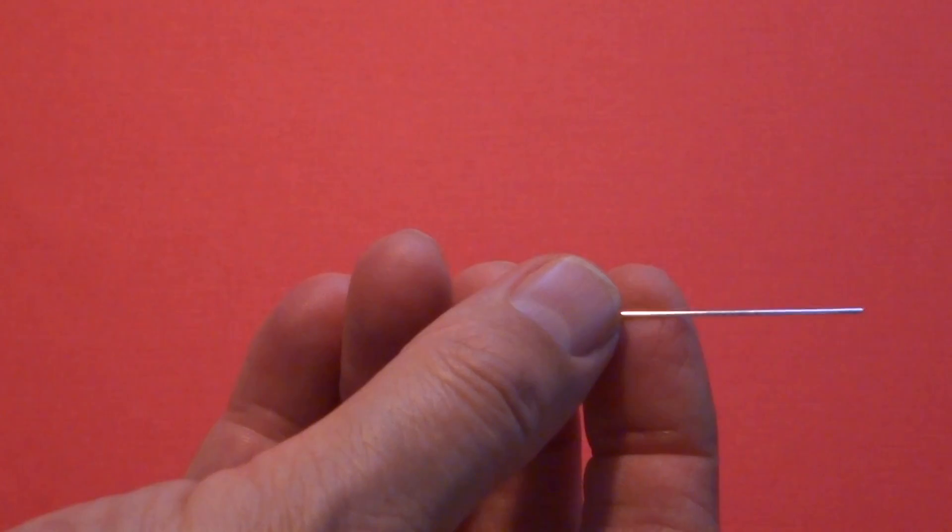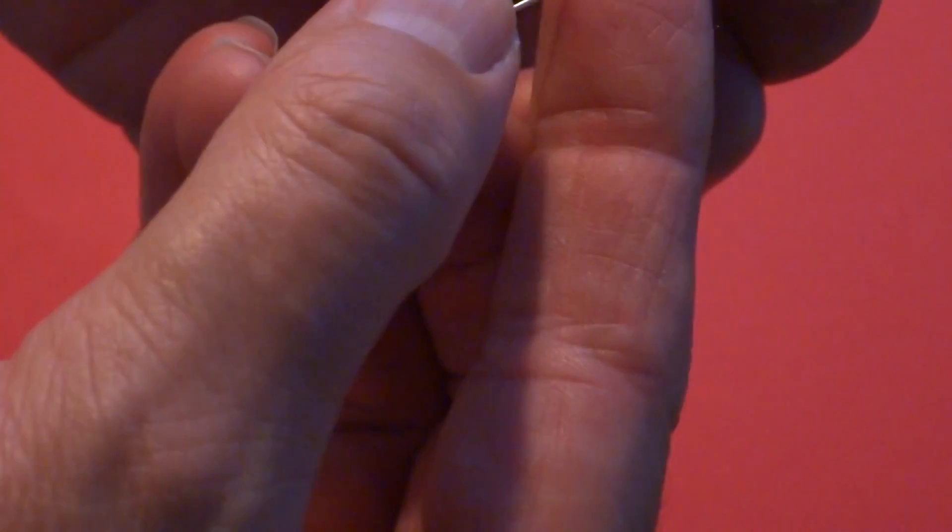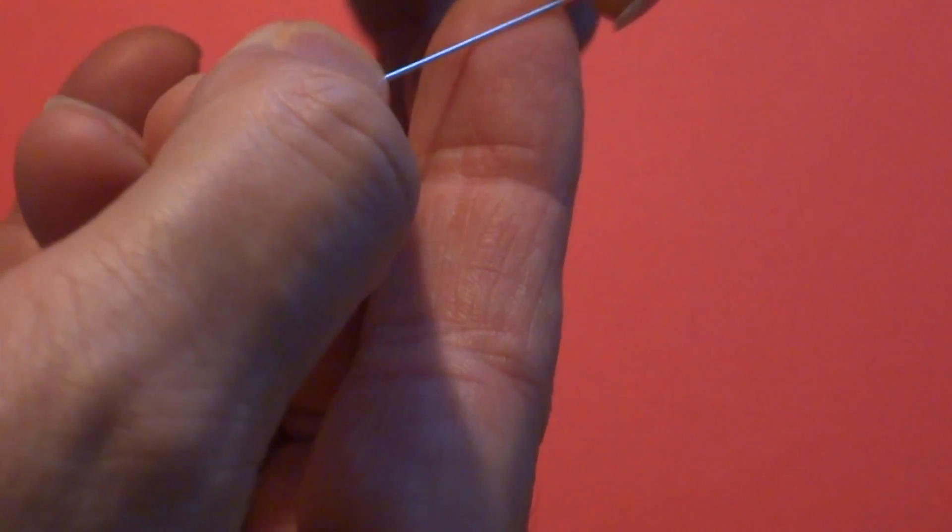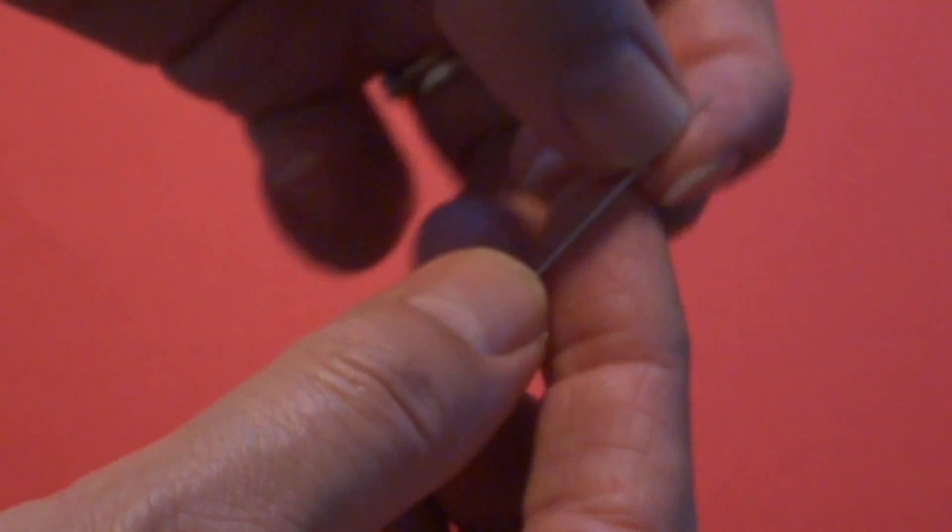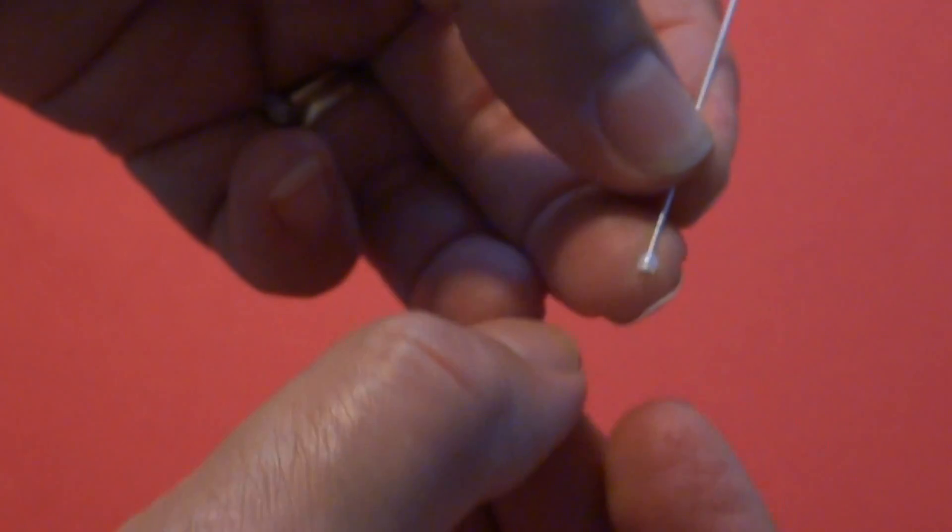You will need about a two-inch head pin, and then you need a stopper bead. I just use these tiny little seed beads—you just need something that will be small enough that it won't go over the head pin.